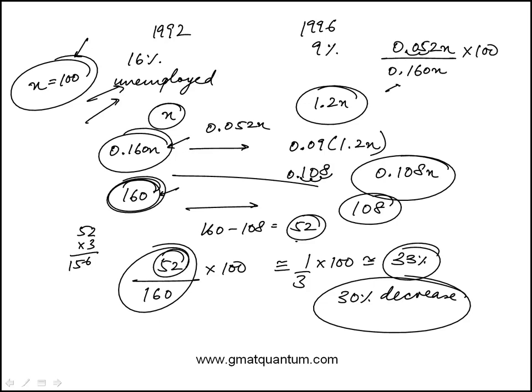You'll notice that moving three places, we get the same result, n drops out. Or you can assume a value for the total number of construction workers to start. Any one of these approaches is acceptable. And the answer is 30% decrease, or choice B.